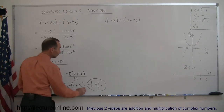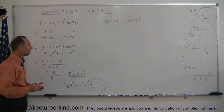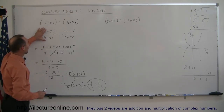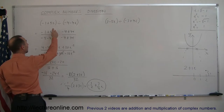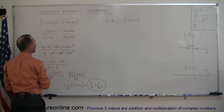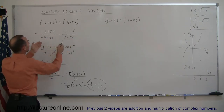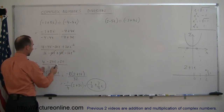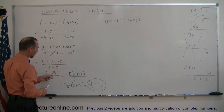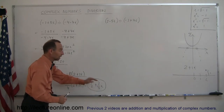Always write the final answer in terms of the real and the imaginary part of the number. Doing division is quite different: you first write it as a fraction, then multiply that fraction by the conjugate of the denominator, with the real purpose of getting rid of the imaginary part of the denominator. When you multiply, the imaginary part in the denominator cancels out. Then combine like terms in the numerator and denominator, simplify by factoring, and write the answer in its simplest form.